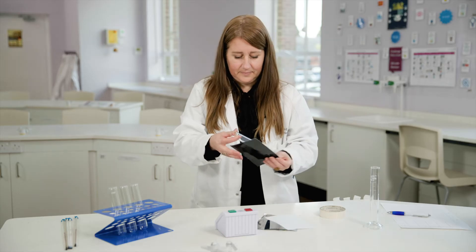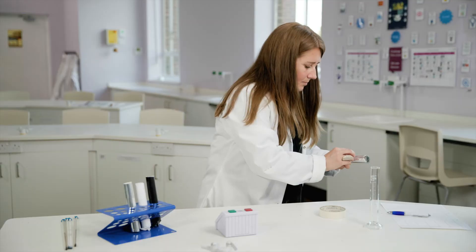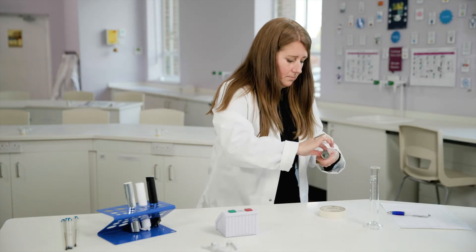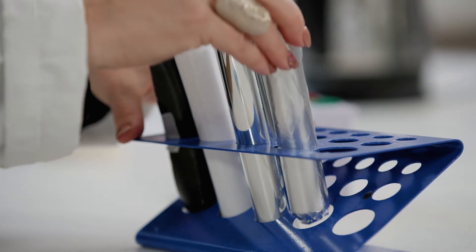First thing you will need to do is cover four boiling tubes in different colored materials. Try to use the same thickness of material for each tube as we are trying to change one variable.